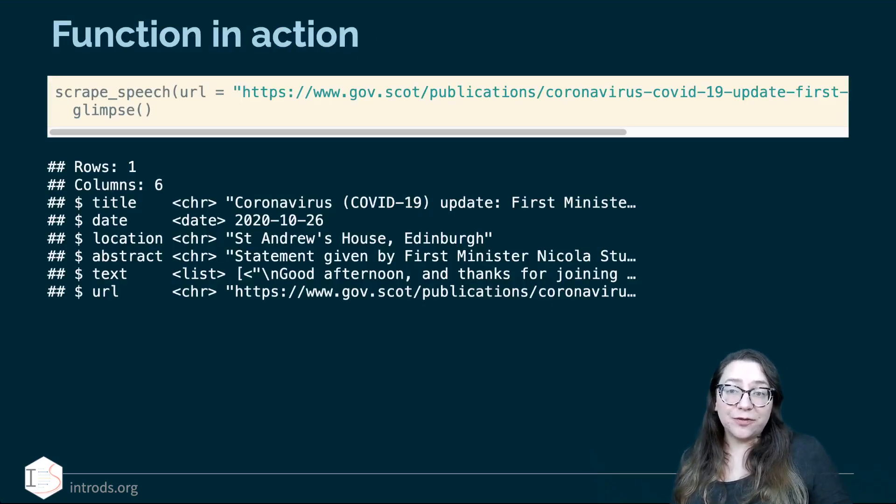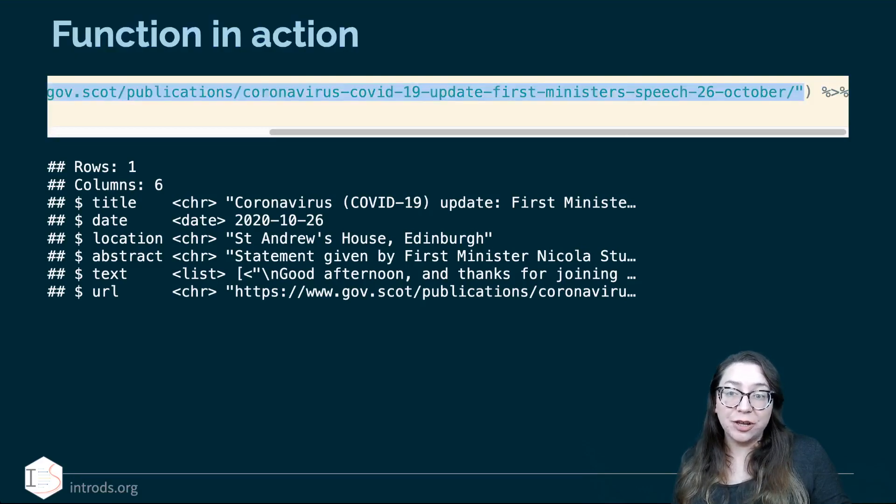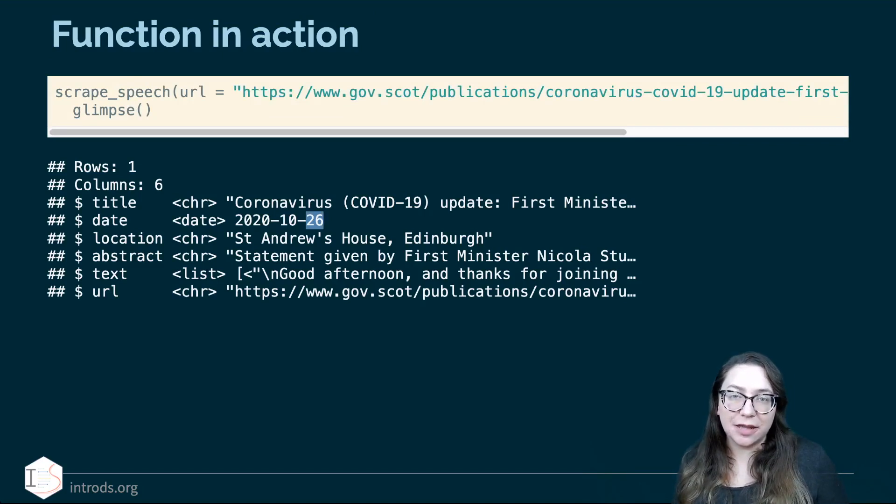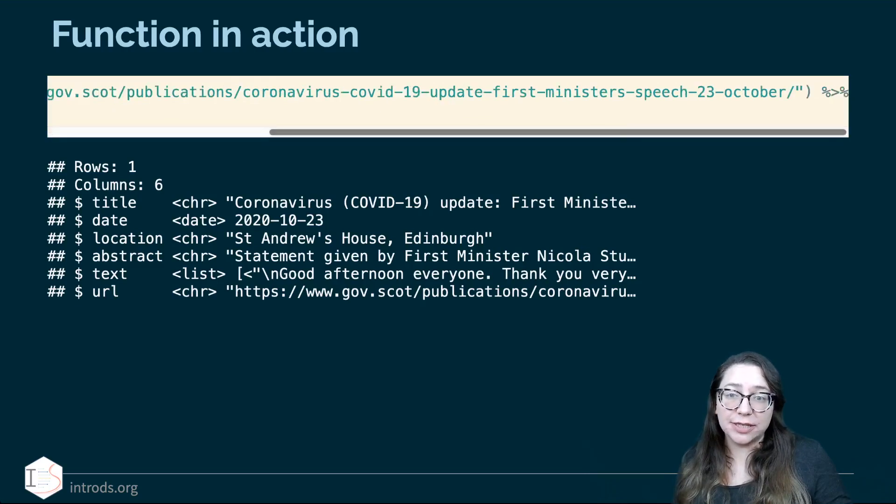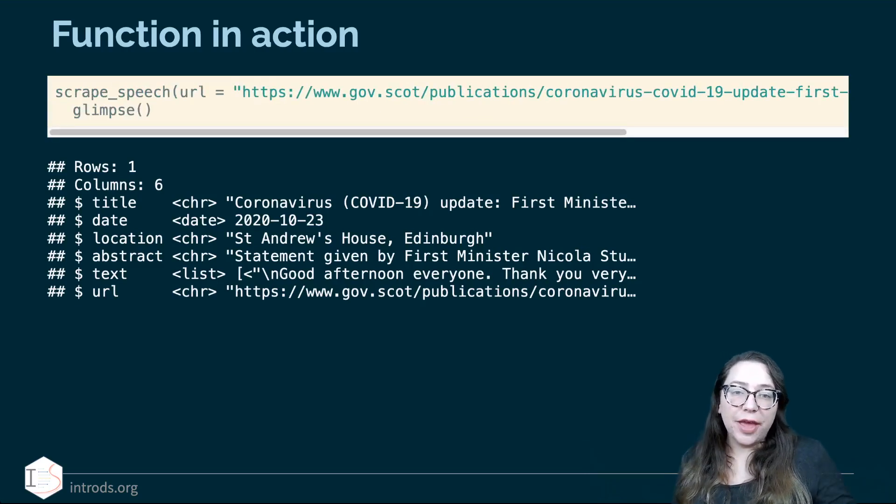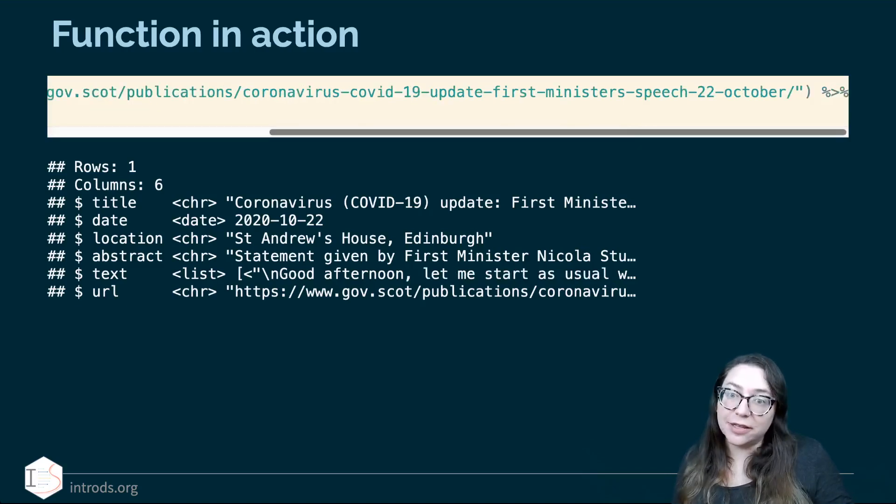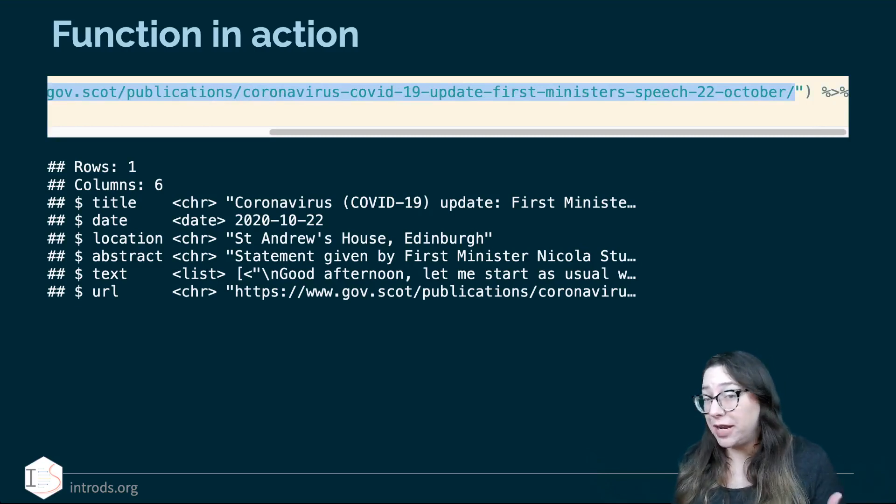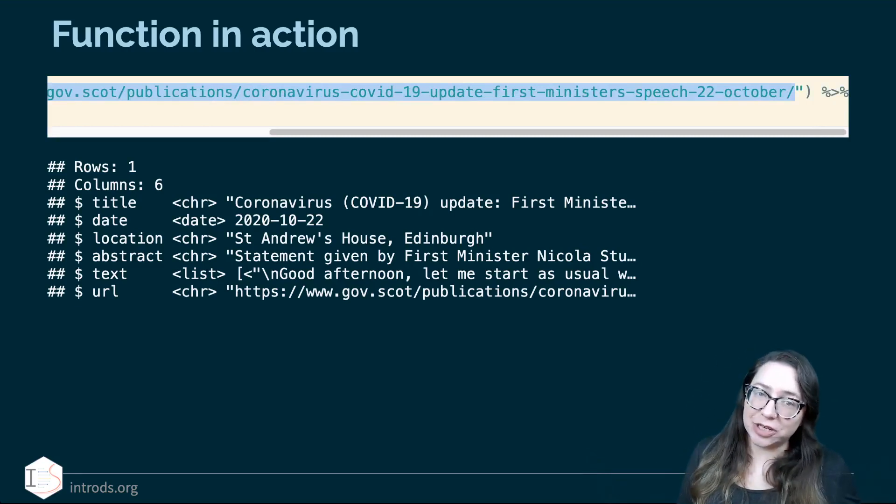So if for example with this function that I just defined I pointed it, I gave it for the argument URL, I set it to the URL for the 26th of October speech. I in fact get a tibble out. I can glimpse at it with six columns in one row and I can see the information that pertains to October 26. I can do the same thing for the 23rd. So the only thing that changed is the input again and I get that information. And I can do the same thing for the 22nd. And again, the only thing that changed is the number as a date and the rest of the information. But basically for my input, the only thing that changed is the URL. So this is already looking a lot better than copying and pasting that giant chunk of code.